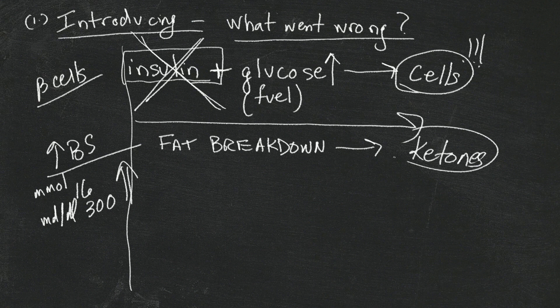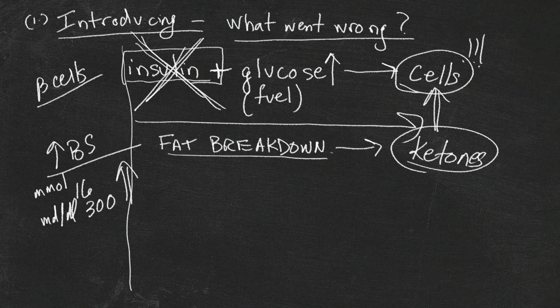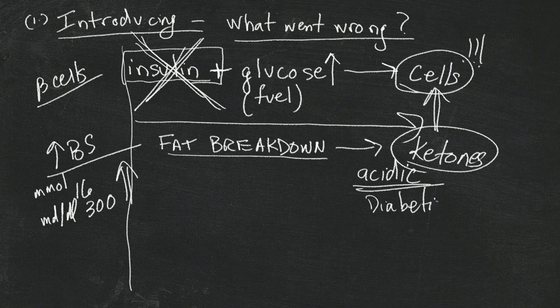When you break down fat, one of the byproducts of that fat breakdown is the production of ketones. Ketones can be used as an alternative source of fuel for the cells and you don't need insulin to bring them into the cell. But over time, with no insulin and cells starving, your body keeps breaking down fat and producing more ketones. These ketones are acidic, and if we don't stop this process, you can go into what's called diabetic ketoacidosis, or DKA.